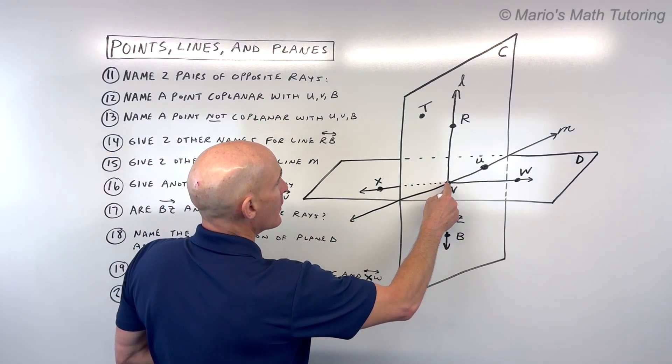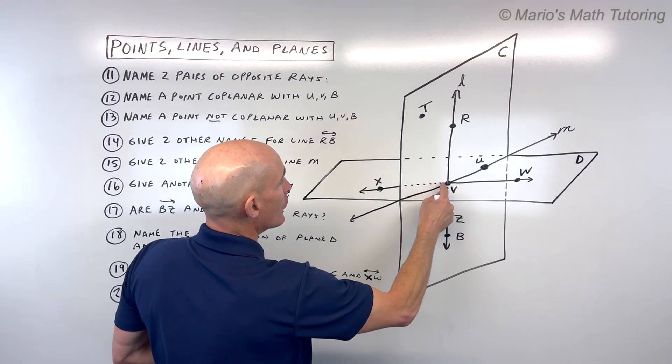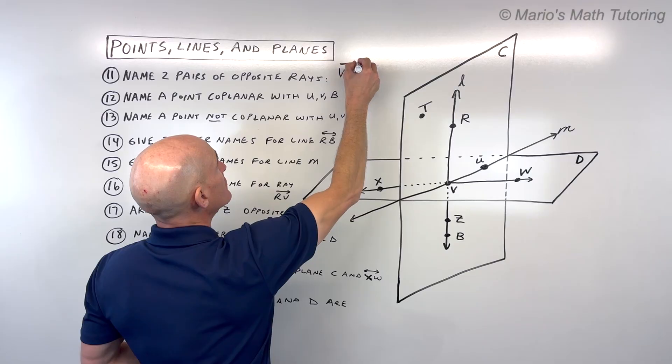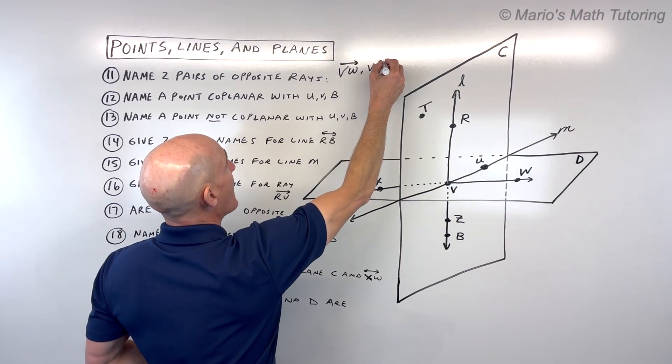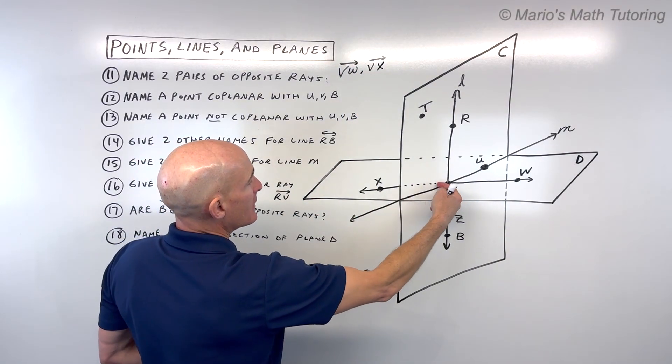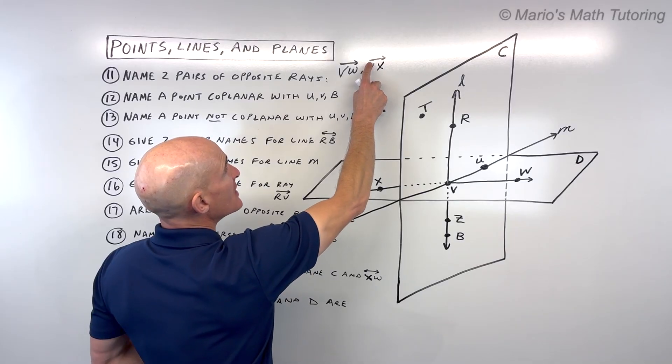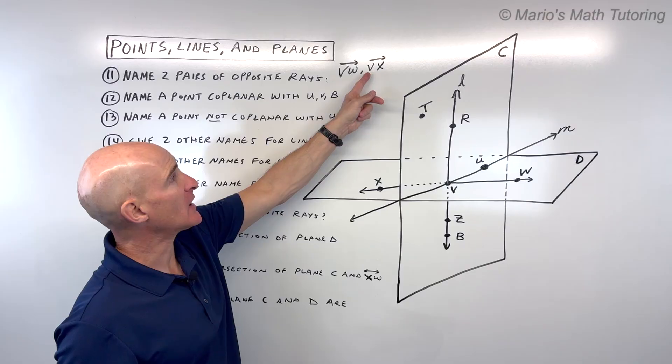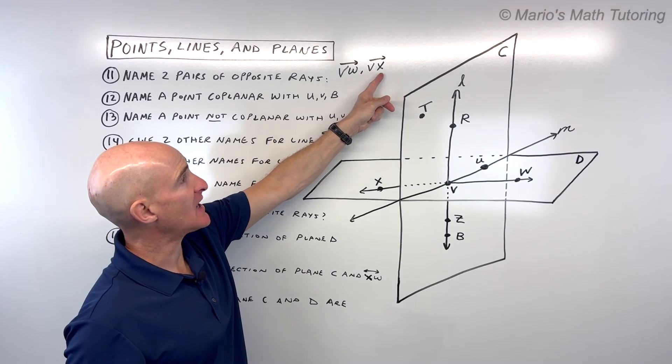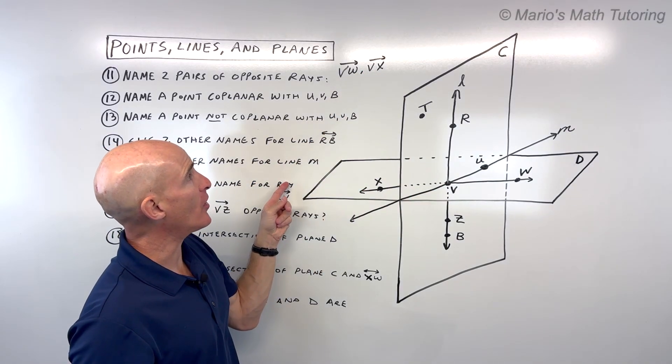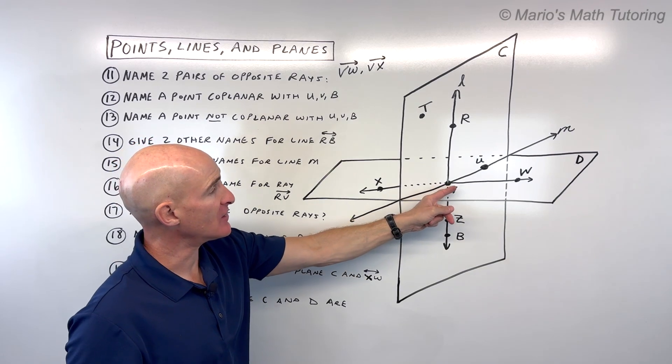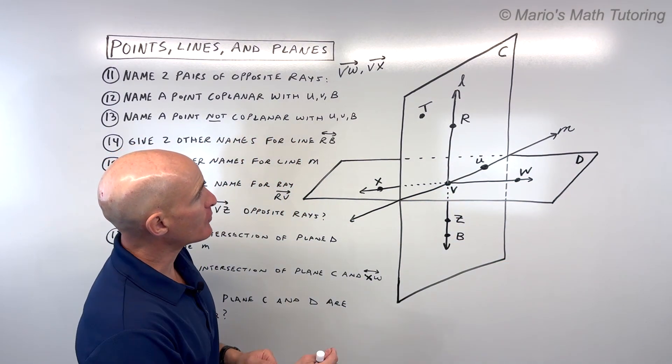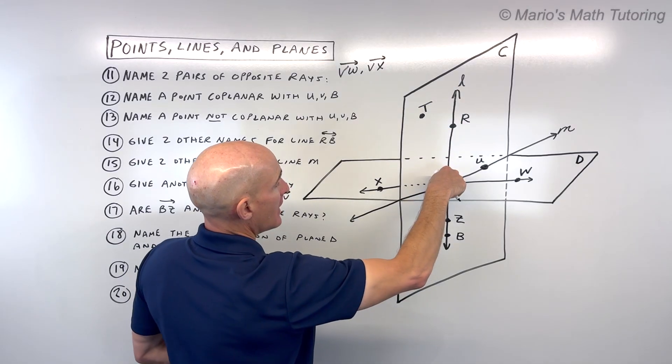Here I could say ray VW and ray VX. Notice that ray VX goes to the left, but the notation is that you still write the arrow pointing to the right. That's the accepted way of doing it. V is the starting point, it's heading towards X and keeps going. This one starts at V, goes towards W, keeps going. That's a pair of opposite rays.